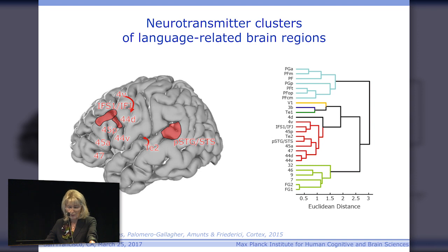What does that mean? The neurotransmitter structure is relevant at the synaptic level. However, these are ex vivo data — cadaver brains — and what you would really like to know is what is happening in the living brain. Unfortunately, we don't have the possibility to go that far into detail there, and we have to rely on other data.